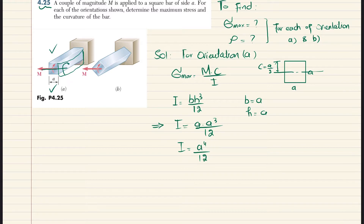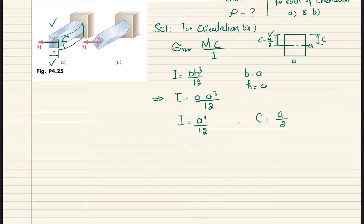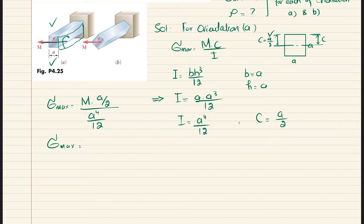With c equal to a/2, we can now compute sigma_max. Substituting into sigma_max equals M·c/I: sigma_max equals M times (a/2) divided by (a⁴/12). Simplifying, the 12 comes to the numerator and the a in the denominator cancels with the a in c, giving sigma_max equal to 6M over a³.